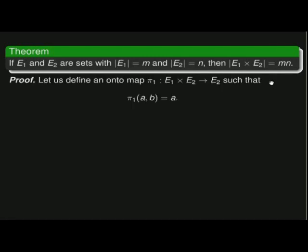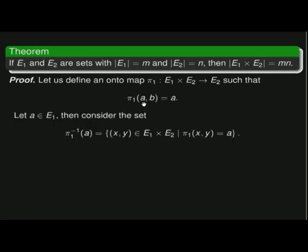So let's see if we can prove that. We'll start off by defining an onto map pi sub 1, mapping E1 cross E2 into E2, such that pi sub 1 of the ordered pair (A, B) is just A. Pi sub 1 is sometimes called a projection map — I'm taking the projection onto the first coordinate of the ordered pair. Now for each A in E1, I'm going to consider the preimage under pi sub 1 of A: all ordered pairs (X, Y) in E1 cross E2 such that pi sub 1 of (X, Y) equals A, meaning X equals A.